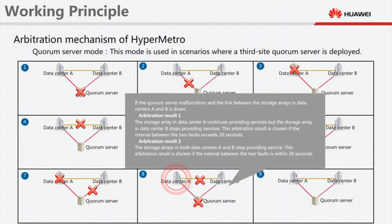If the storage array in data center A breaks down and the link between the storage array in data center B and the quorum server is also down, the storage array in data center A enters the invalid state and the storage array in data center B stops providing services; you must start data center B manually. If the quorum server malfunctions and the link between the storage arrays in data centers A and B is also down, Arbitration Result 1 applies if the interval between the two faults exceeds 20 seconds: data center A continues providing services and data center B stops. Arbitration Result 2 applies if the interval is within 20 seconds: both data centers stop providing services.